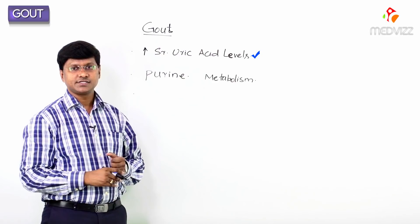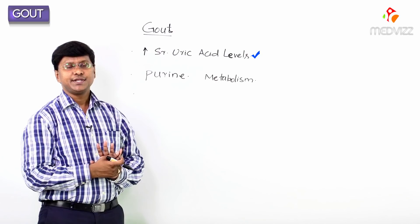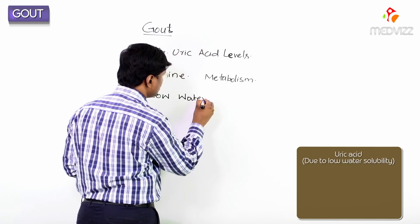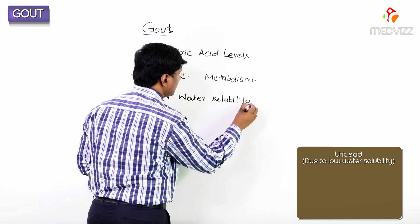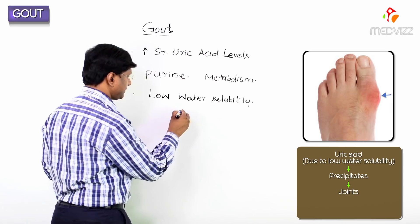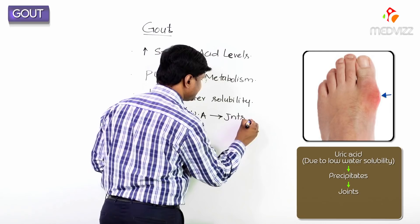The uric acid levels are very much elevated in gout or gouty arthritis. Uric acid has a low water solubility, and because of this low water solubility, uric acid gets precipitated within the joints.